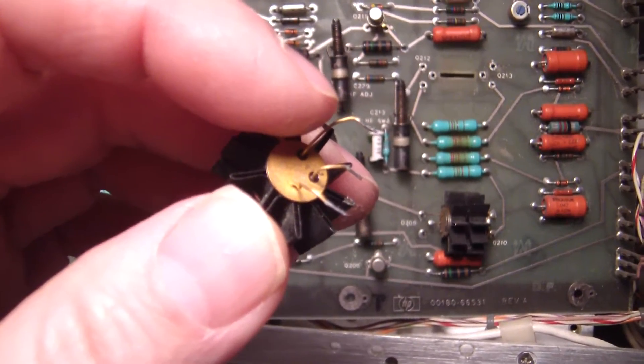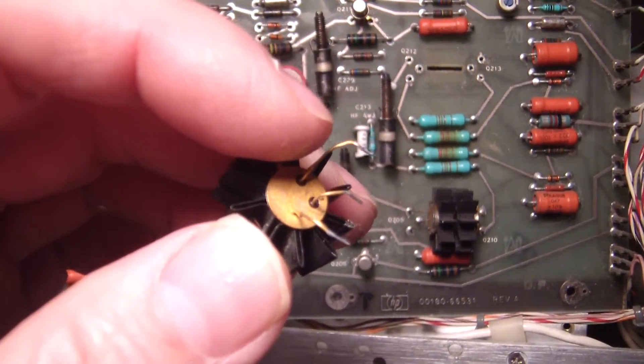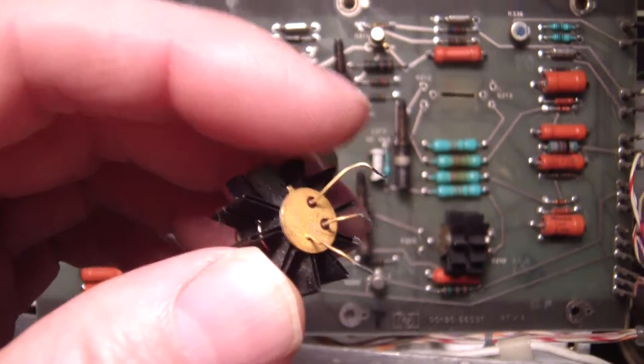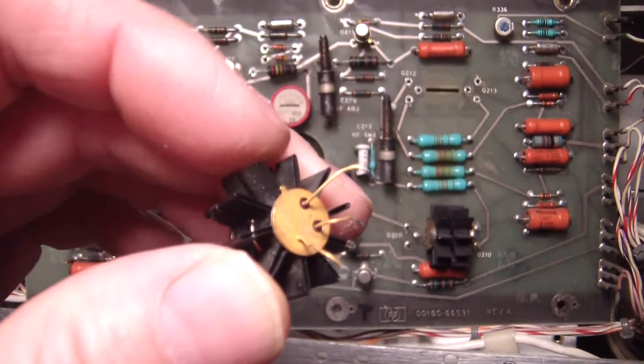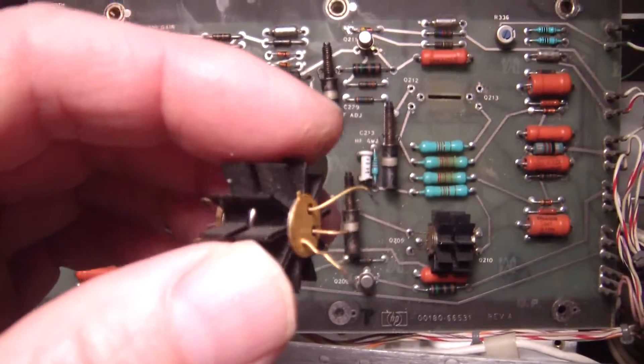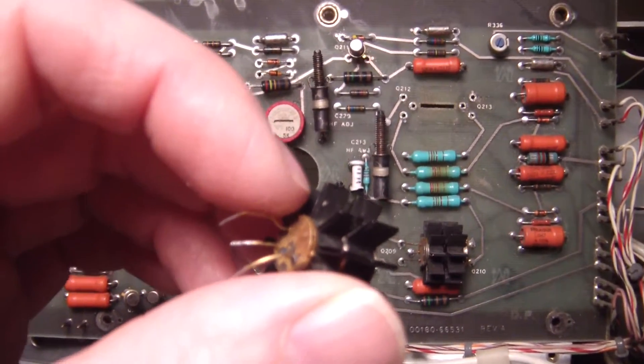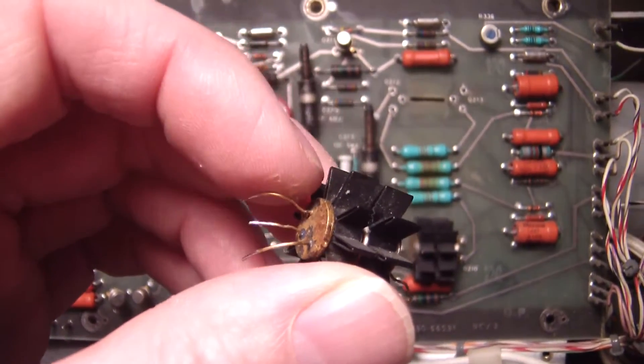This transistor here, which was the Q213, measured okay in circuit and out. Although the HFE was around over 100, whereas once I measured this one here again, which was now functional, its HFE was around 60.